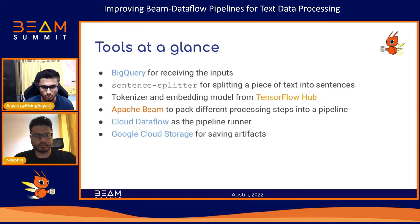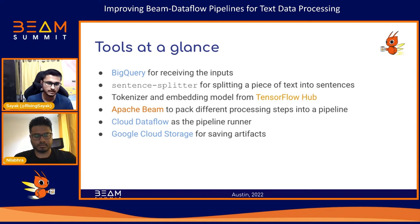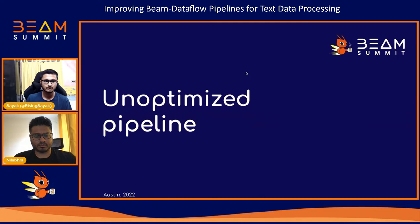Here are the tools we leverage to build the pipeline. Our inputs come from BigQuery. We use a Python library called SentencePiece for splitting text into sentences. Our tokenizer and embedding models come from TensorFlow Hub. We use Apache Beam to pack different pre-processing steps into a pipeline, Cloud Dataflow as our pipeline runner, and Google Cloud Storage for saving all the artifacts. Here's a close look at the unoptimized pipeline we'll be starting with.